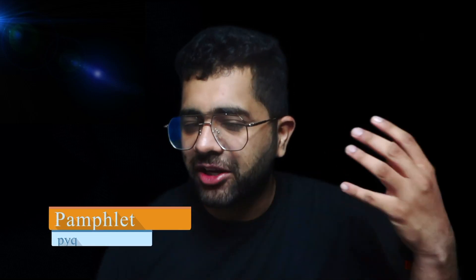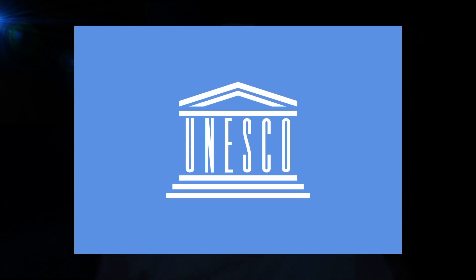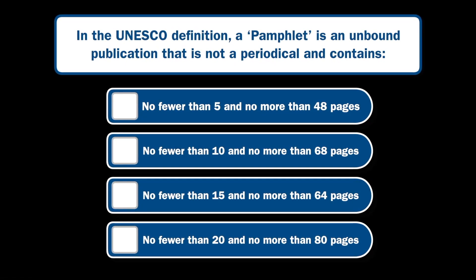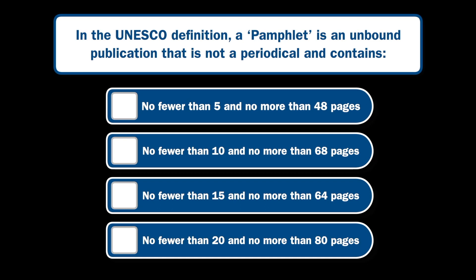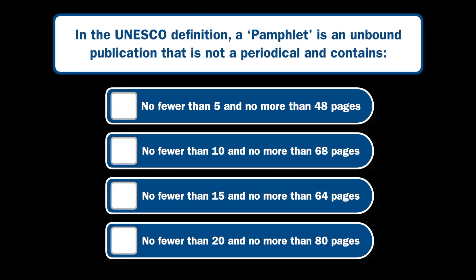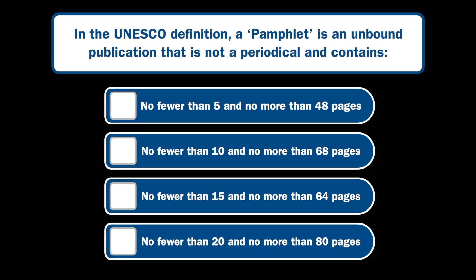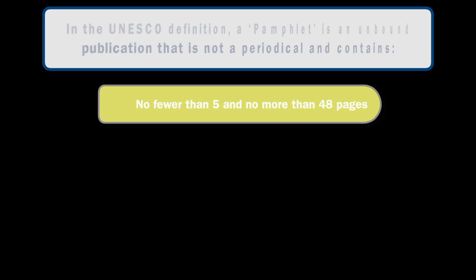Good morning students, hope you are doing well. We are back again with another previous year question related to pamphlet. The question was about the definition of pamphlet as per the norms of UNESCO. The question was: in the UNESCO definition, a pamphlet is an unbound publication that is not a periodical and contains no fewer than 5 and no more than 48 pages.